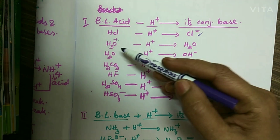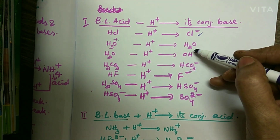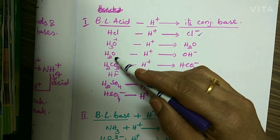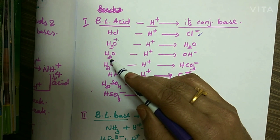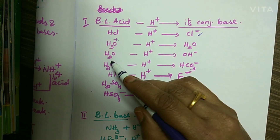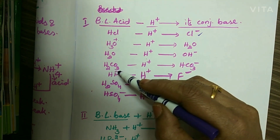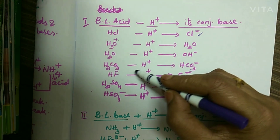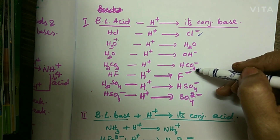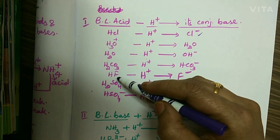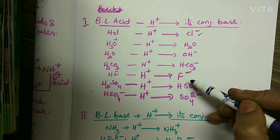H3O⁺ minus H⁺ gives H2O. When H2O is taken as an acid, by losing a proton it forms OH⁻, a strong base. So water is a weak acid and its conjugate base OH⁻ is a strong base. H2CO3 minus H⁺ gives HCO3⁻, which is a strong base. And HF is a strong acid; by losing a proton it forms F⁻, which is a weak base.